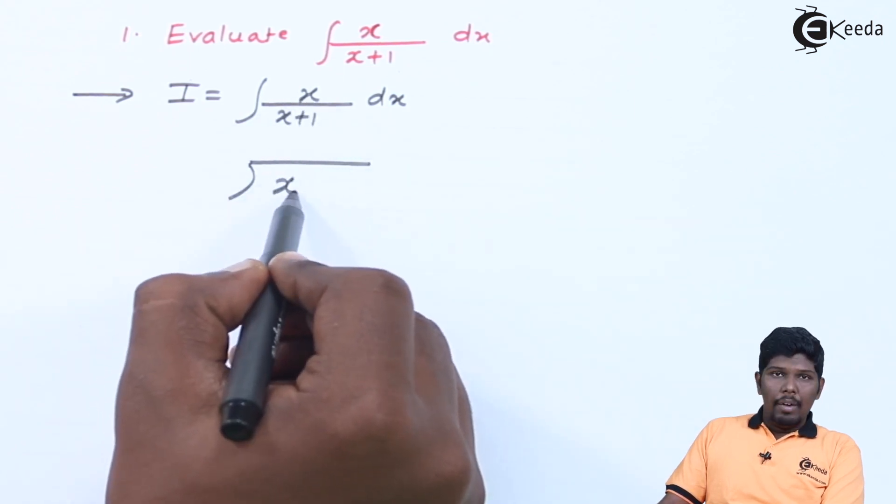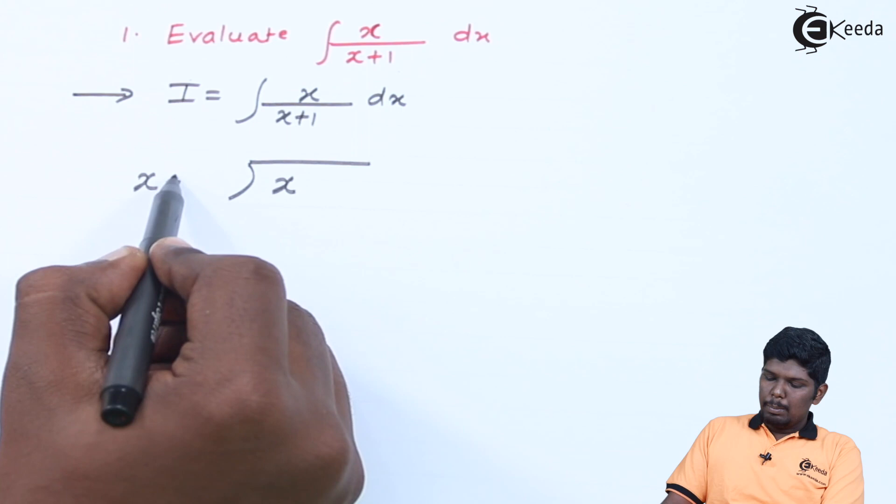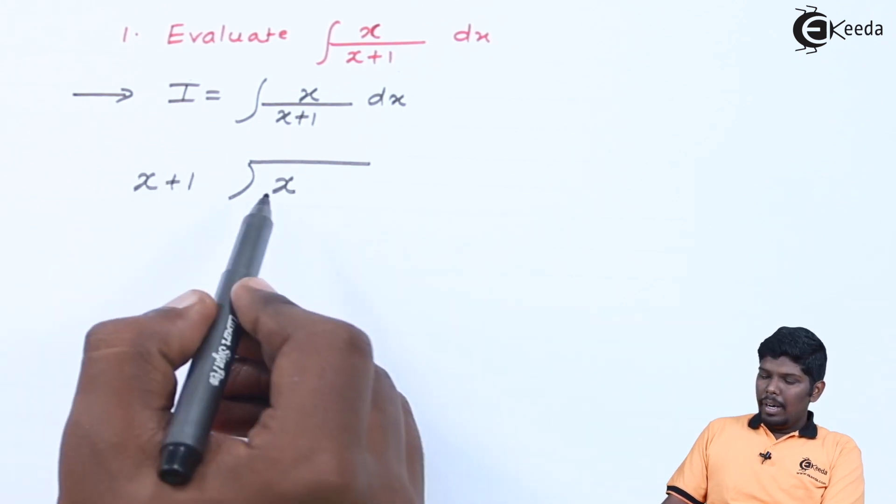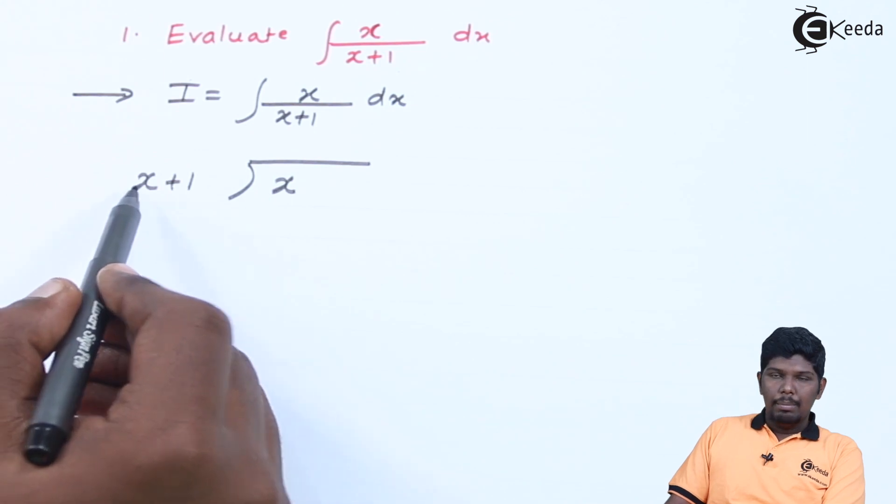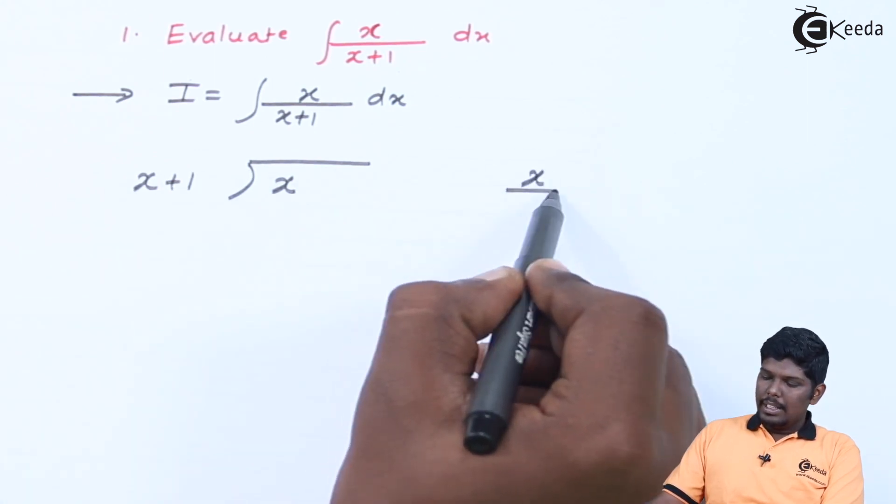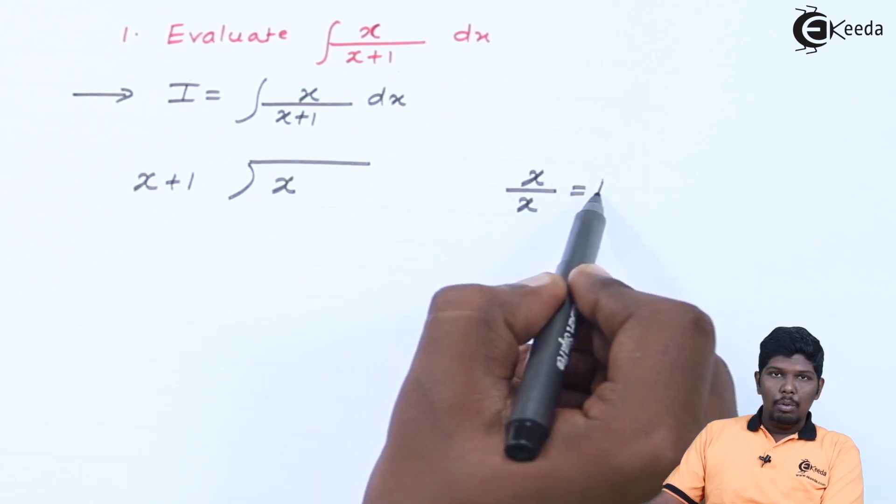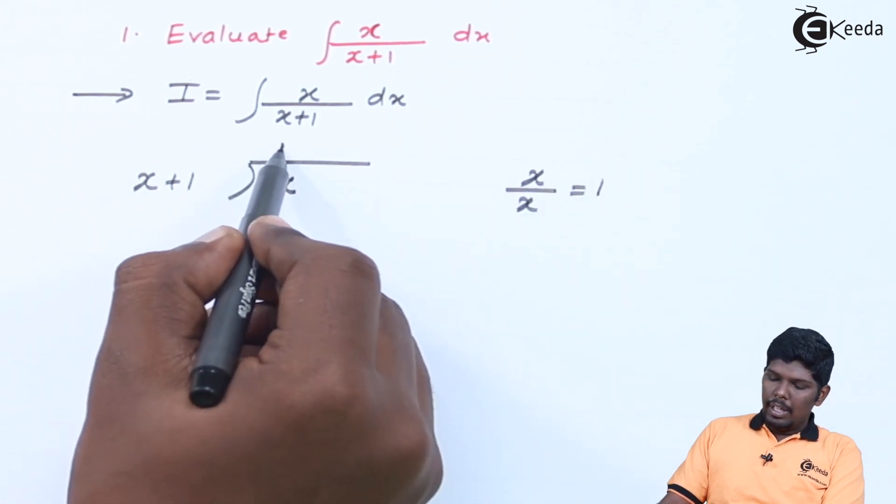In the numerator we have x divided by x plus 1. To divide this equation we need to divide first term by first term. The first term was x inside and here the first term is x. X upon x will give you 1. Therefore here we can write 1.